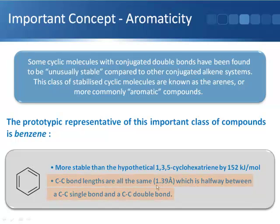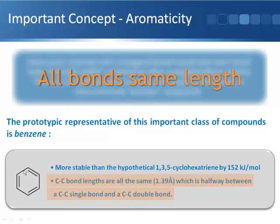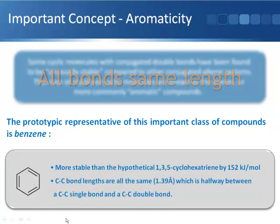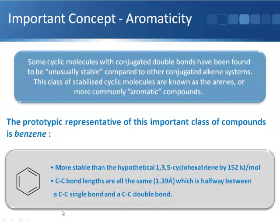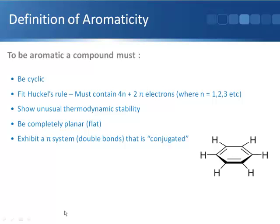Experiments have found that the bond lengths for each of the six bonds in this ring are somewhere between a carbon-carbon single bond and a carbon-carbon double bond, and all the bond lengths are exactly the same. Aromaticity explains this — these bonds are shared evenly over all six atoms in this ring in a circular pi system. When you have a very specific set of elements, you get aromaticity.